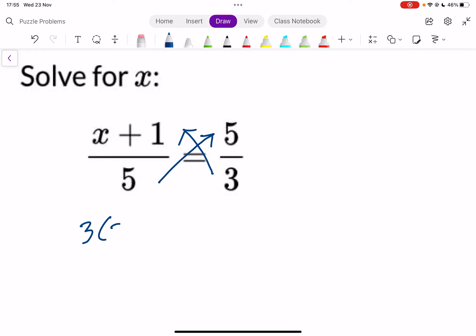So that will become 3 times (x plus 1), and without the bracket it is wrong, and 5 times 5 gives you 25. If you multiply the bracket, you'll have 3x plus 3 equals 25.